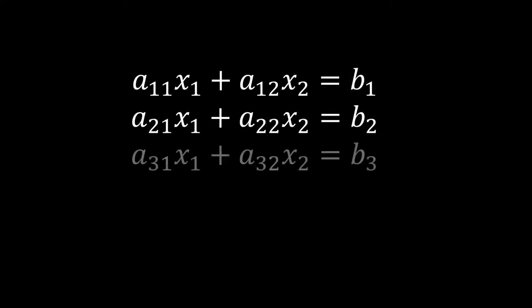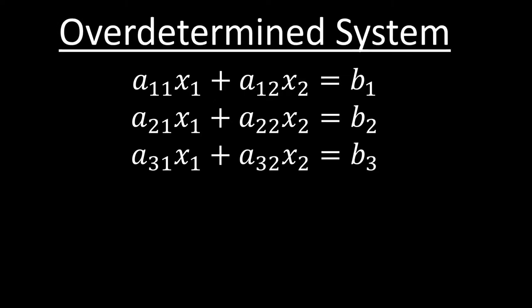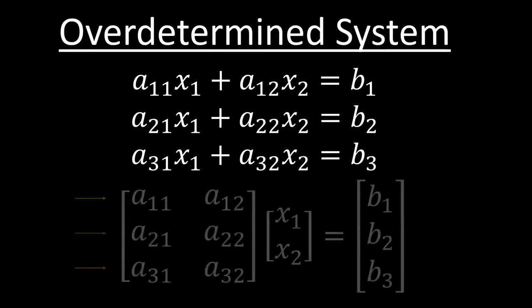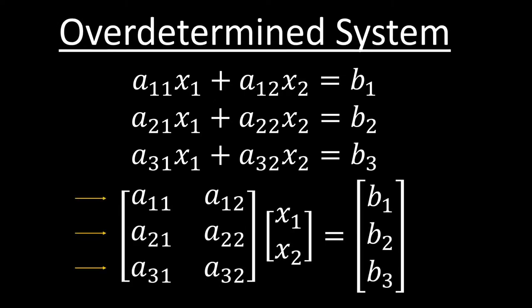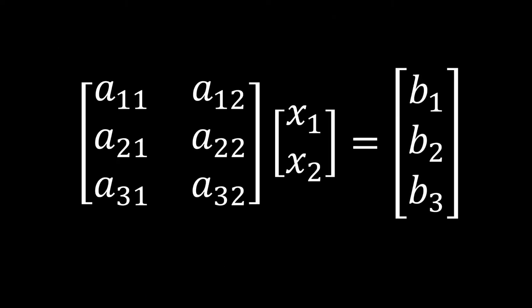A system of equations that has more equations than unknowns is called an over-determined system. With linear algebra, it's a non-square system that has more rows than columns, and the over-determined system has a fatal flaw.